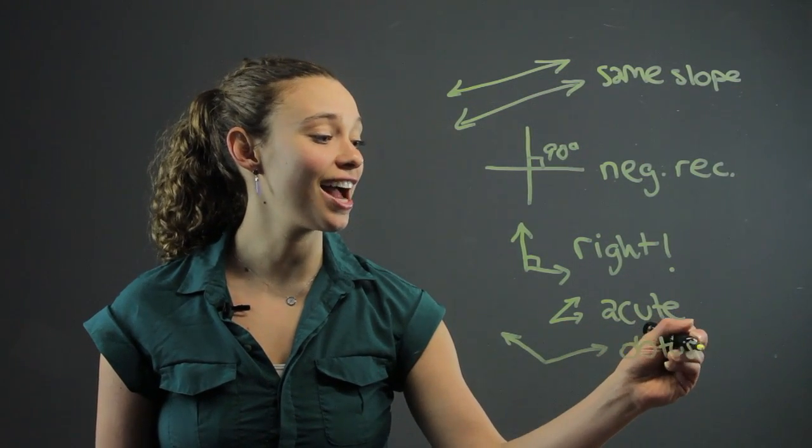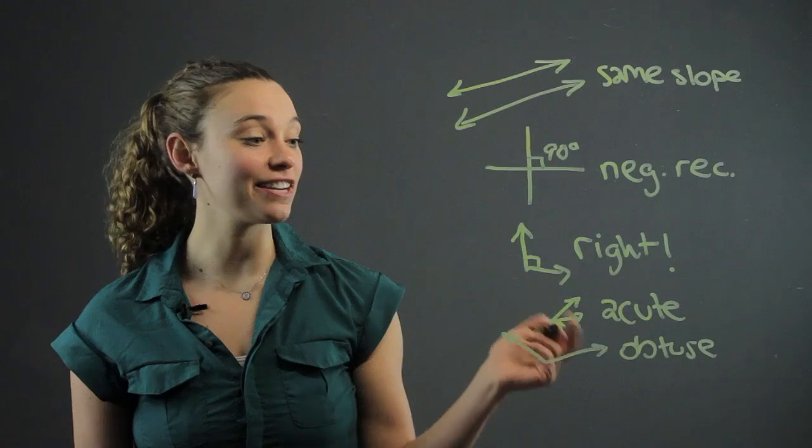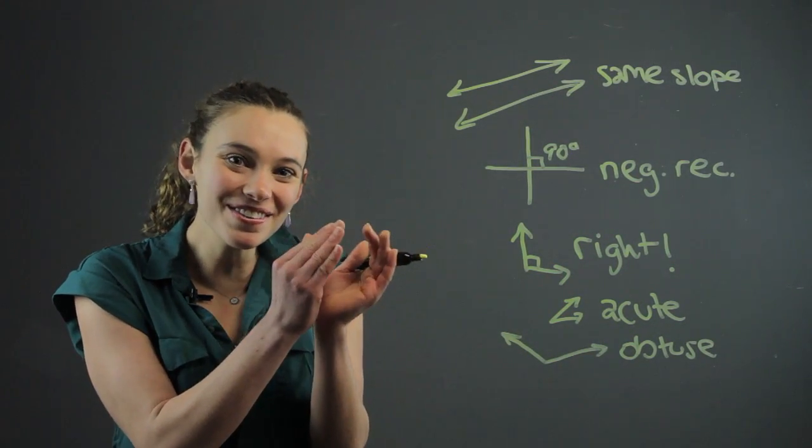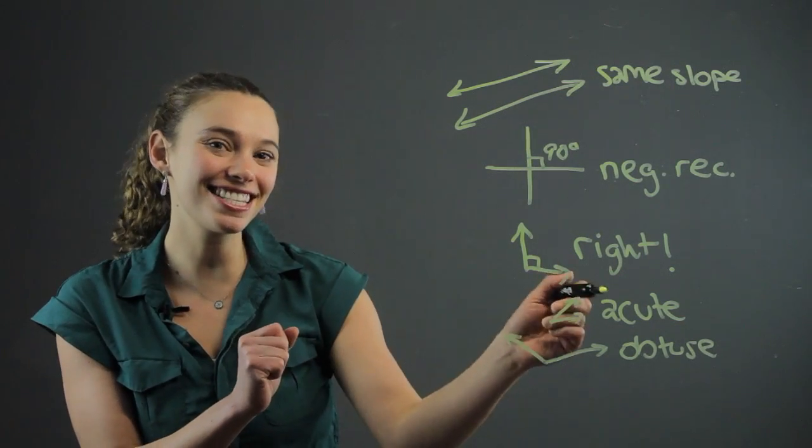A trick that I always think of to remember the difference between acute and obtuse: acute is really small, right? It's like, oh, cute little angle. It's really tiny, less than 90 degrees.